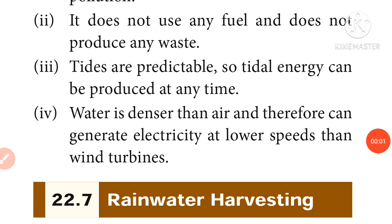Tides are predictable. The tidal stream can be produced at any time. Water is denser than air and therefore can generate electricity at lower speeds than wind turbines.